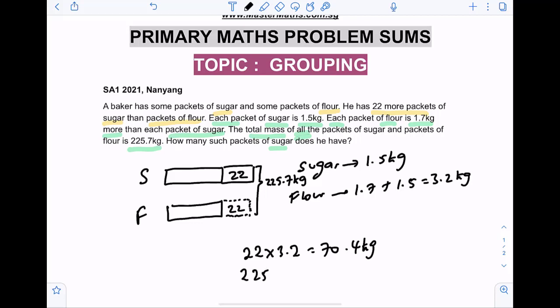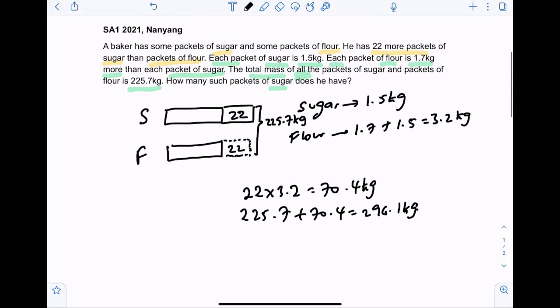So the new mass will be 225.7 plus 70.4, which is gonna be 296.1 kg. Now this 296.1 kg is the new total mass if the number of flour packets here is the same as the original number of sugar packets.